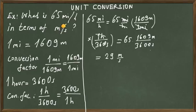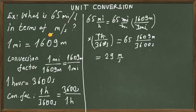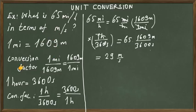So in this problem, what is 65 miles per hour in terms of meters per second? Miles is a unit of length and hour is a unit of time, so we need to convert miles into meters and hours into seconds. For such conversions, we first need to find the conversion factor.